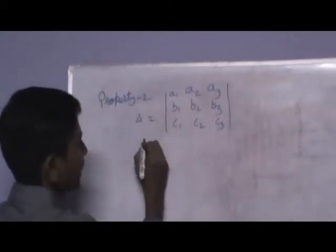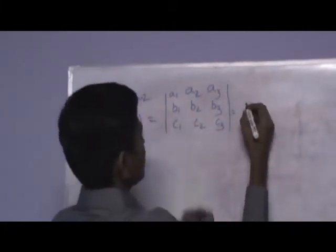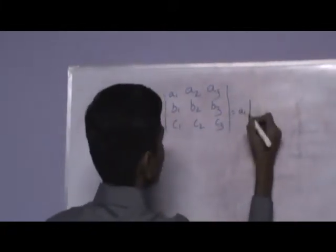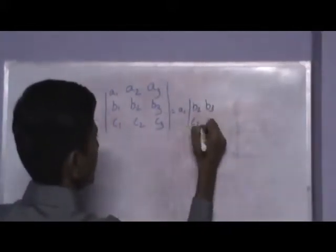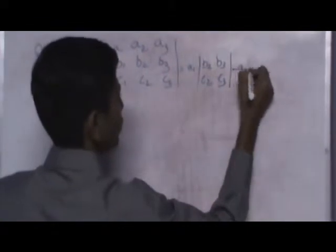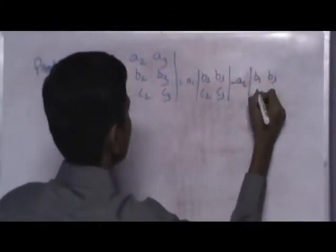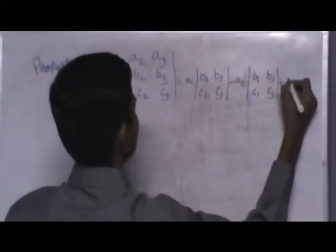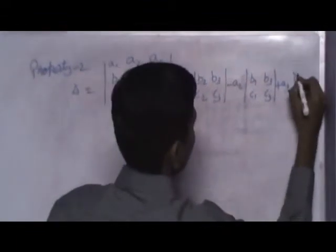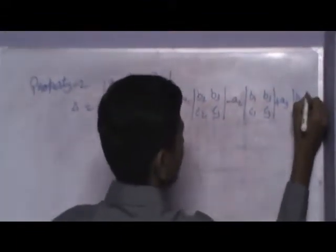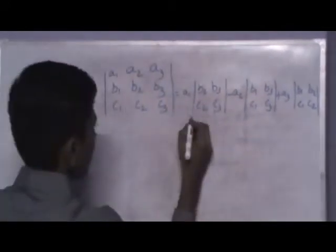Let us take it as delta. We expand it by rows. A1 into B2 B3, C2 C3, minus A2 into B1 B3, C1 C3, plus A3 into the determinant of B1 B2, C1 C2. Expand it.